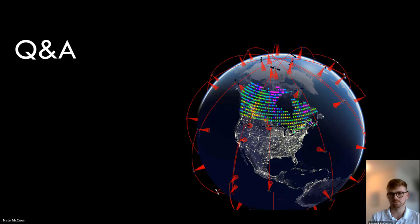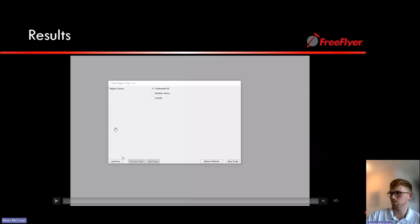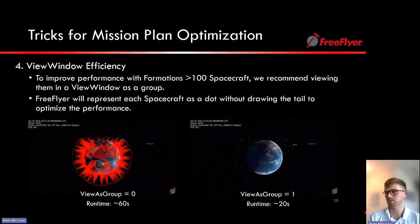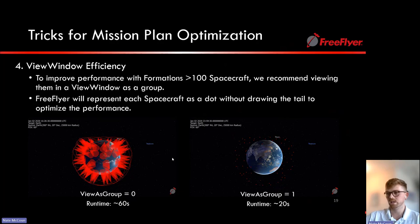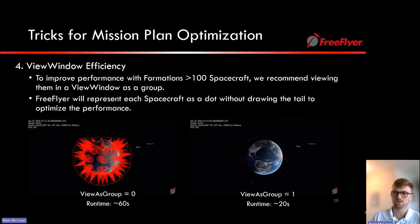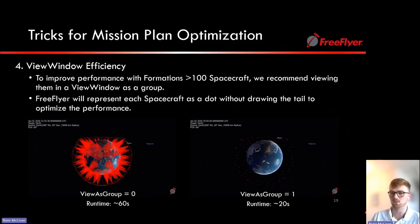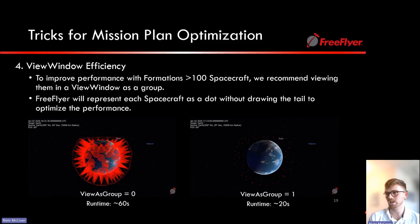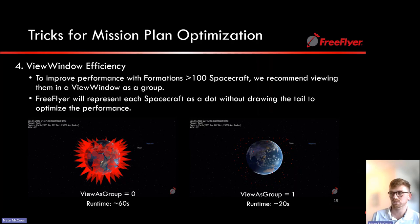Q: Why does adding a tail for the satellite increase the runtime? A: When viewing with tails, you're storing the tail history for each spacecraft, visualizing sensors, and rendering 3D models. When viewing as points, you only update the state once per step—one data point used in the 3D visualization. In FreeFlyer 8, currently under development, this performance impact is expected to be eliminated. For now, with larger-scale constellations, it is recommended to visualize as points.